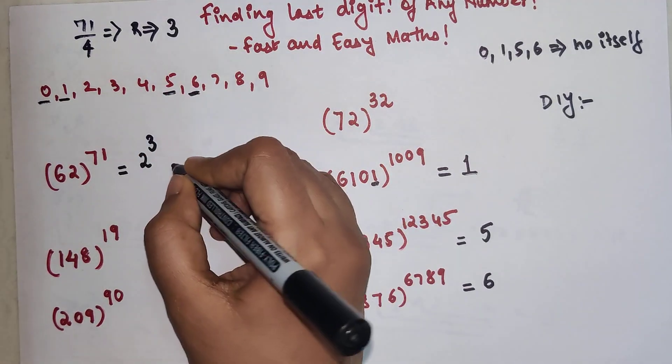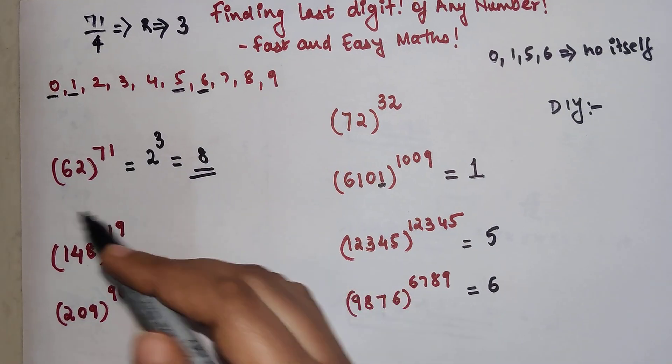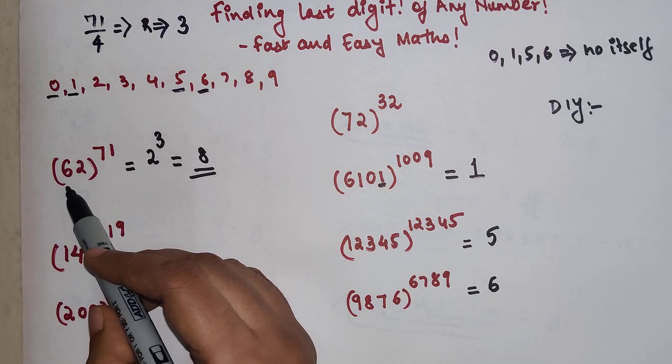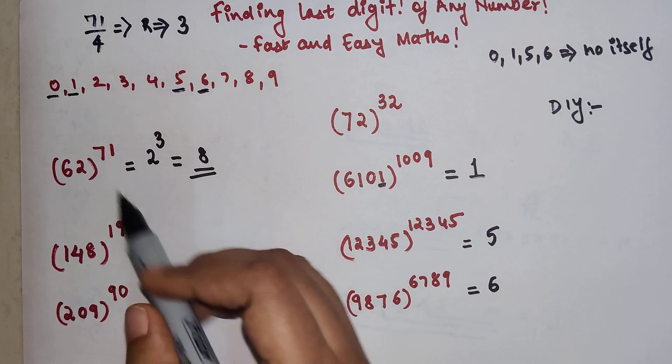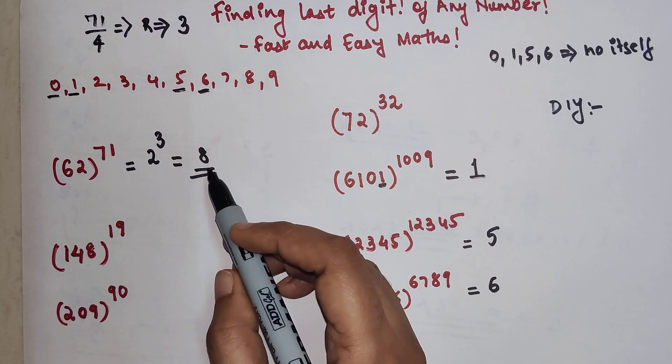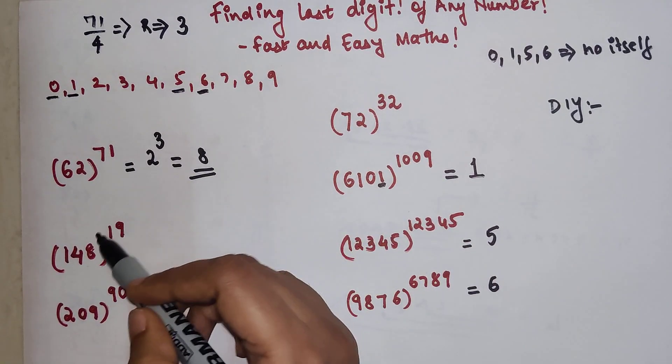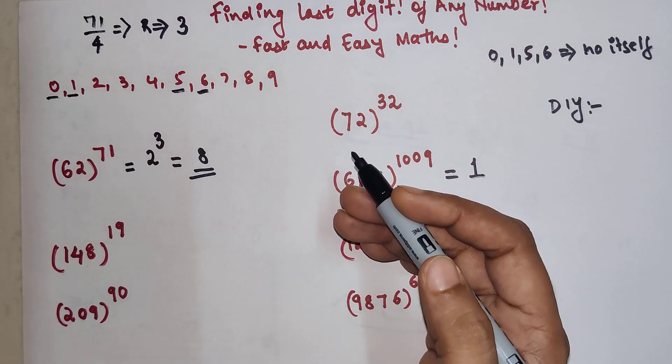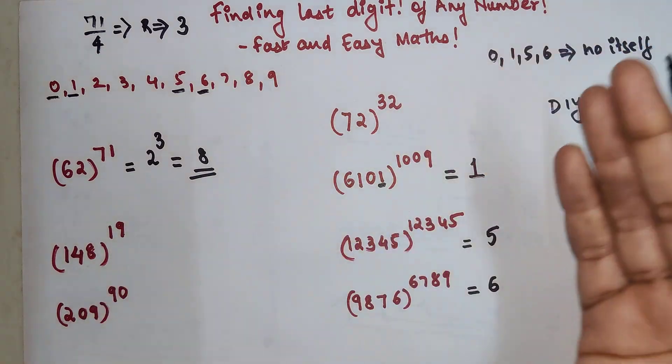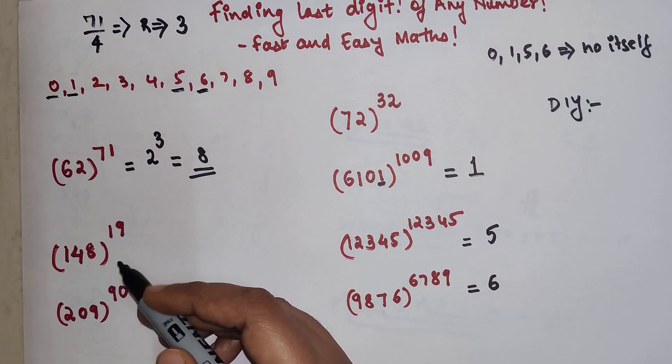So your final answer will be 8. I can say that upon actually doing 62 raised to 71, my last digit will only be 8. I hope you understood how to do this. I'll very quickly revise: simply take the power, divide by 4, and whatever is your remainder, you take that as your index for the last digit of the question.